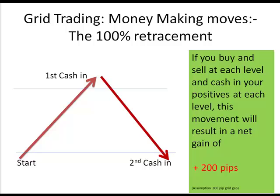Now let's look at some money-making moves using the grid system. The first is the 100% retracement move, which results in a 200-pip profit when using a 200-pip grid. You start with a buy and sell at the start, price goes up to the next level where you enter a new buy and sell, cash in the positive transaction and leave the negative. The price then moves back to your start level where you cash in on the sell going down; your previously negative sell breaks even because the price has returned to that level, resulting in a 200-pip profit.